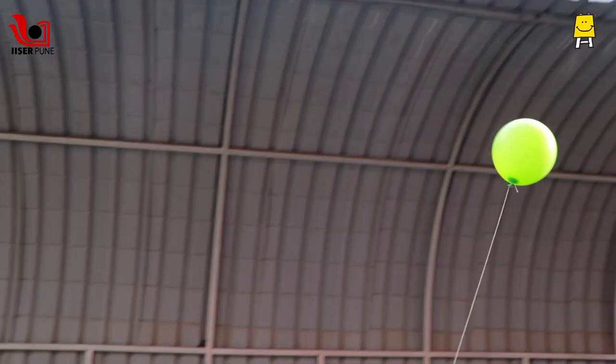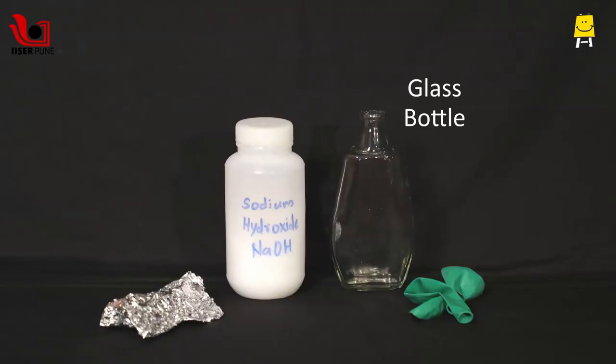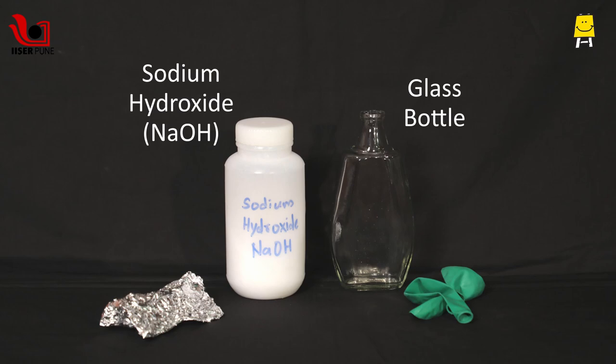Now for the floating balloon, we will need a glass bottle, sodium hydroxide or NaOH, aluminium foil and a green balloon.